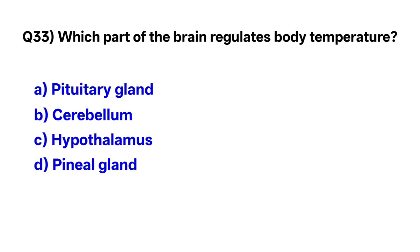Question number thirty-three: Which part of the brain regulates body temperature? The correct option is C, hypothalamus.